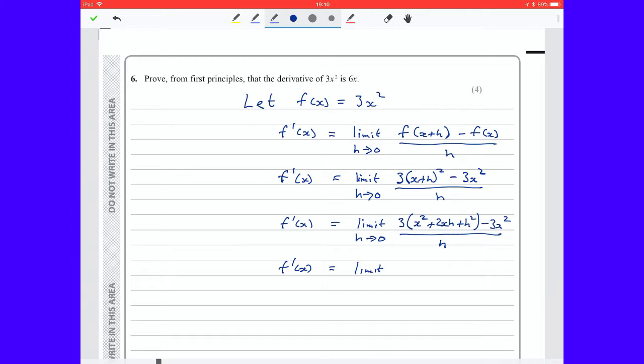So that's the limit as h tends to 0 of 3x squared plus 6xh plus 3h squared minus 3x squared all over h.